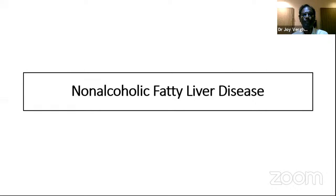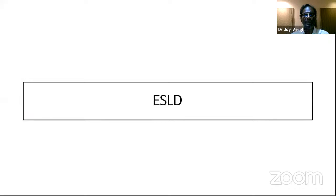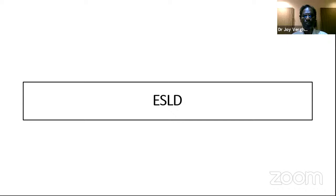All the metabolic syndrome risk factors — diabetes, hypertension, dyslipidemia, obesity — cause poor outcomes in COVID-positive patients. So identifying NAFLD patients and educating them is important. Cirrhosis, or end-stage liver disease, has two components: compensated cirrhosis where the patient has no symptoms but imaging shows cirrhosis, and decompensated cirrhosis where patients have jaundice, pedal edema, ascites, GI bleeding, or altered sensorium.